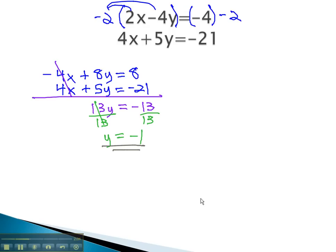To find our x value, we simply plug that negative 1 in for one of the y's. Let's plug it into the first equation, because that's probably the easier equation to work with. 2x minus 4y, which we just found out was negative 1, equals negative 4.